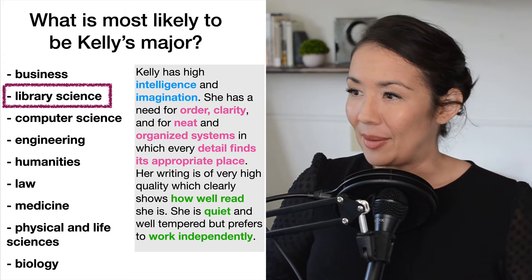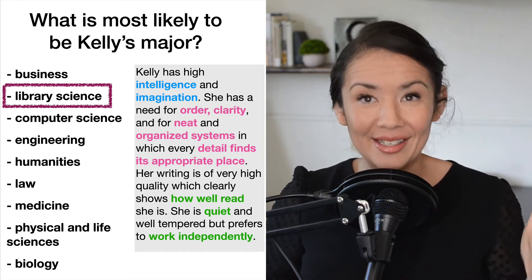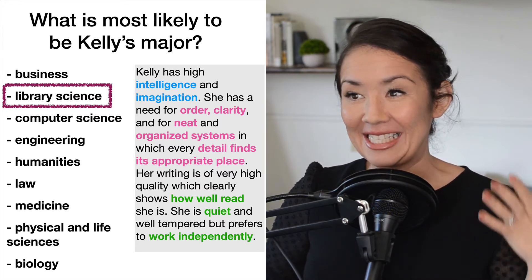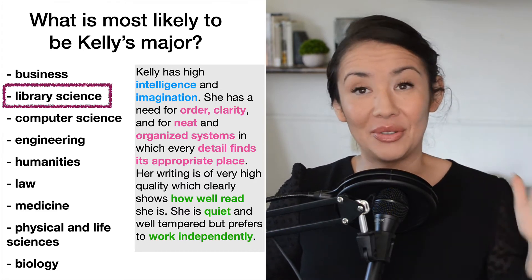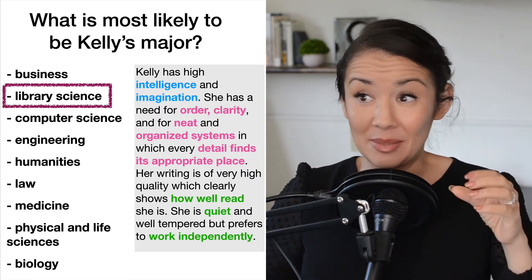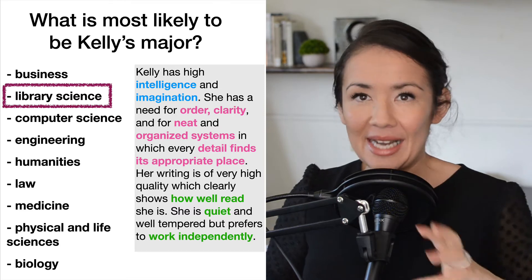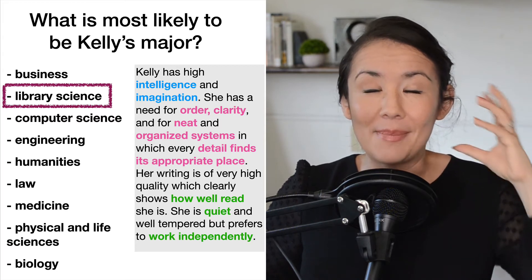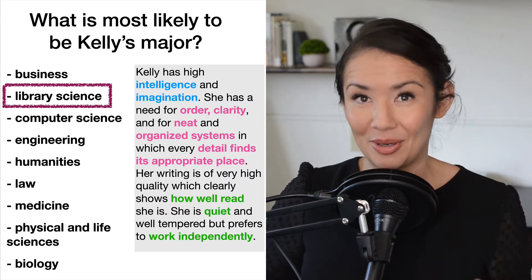She has interest in order and clarity, putting everything in its place, she's well read, she's quiet, likes to work independently — makes perfect sense, right? Well, what is interesting here is that library sciences is one of the smallest majors across all universities. So the true likelihood that Kelly is a library science major is the smallest out of all of these options. But we don't think about that when we're reading this scenario about Kelly. Instead, we're thinking of an archetype of Kelly, imagining what Kelly would be like in our mind and trying to find a major that's appropriate with the type of person she is.